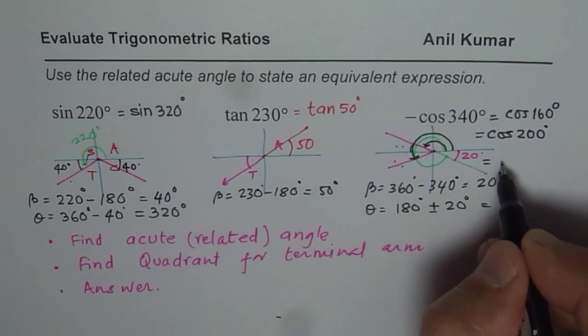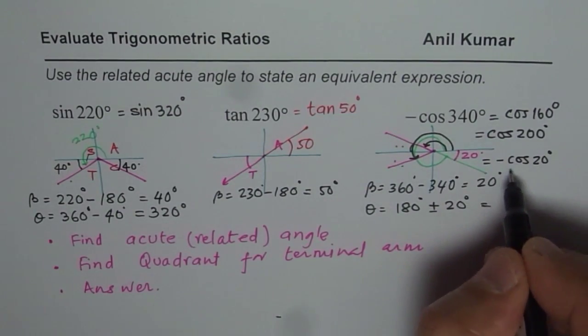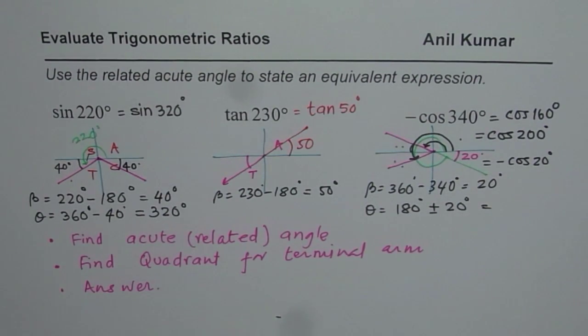You could also write this as minus cos of 20 degrees. That will also give you a negative answer since all are positive in quadrant 1. So as you can understand and appreciate, we can get more than one equivalent expression for any given trigonometric expression. It is how you see it. I hope this video helps you to understand the concept. Thank you and all the best.